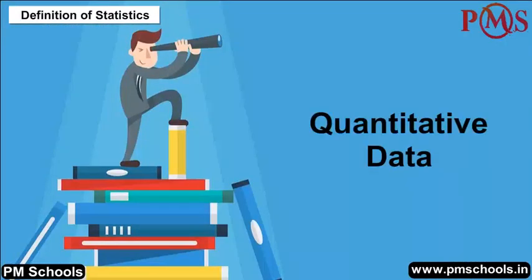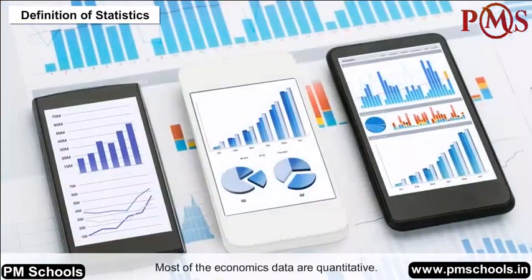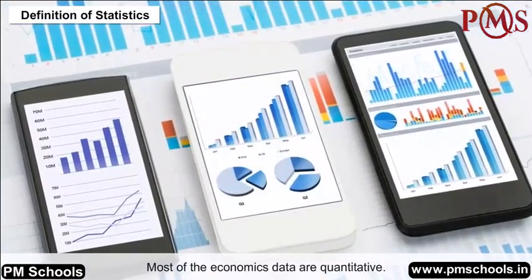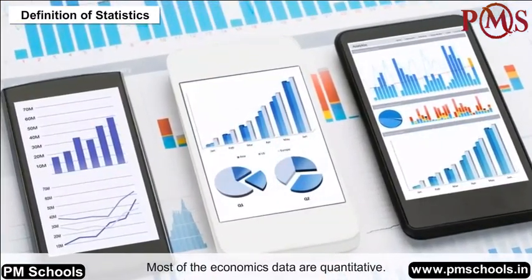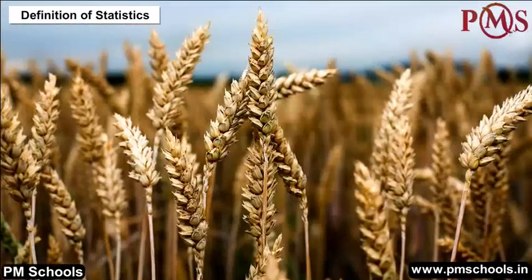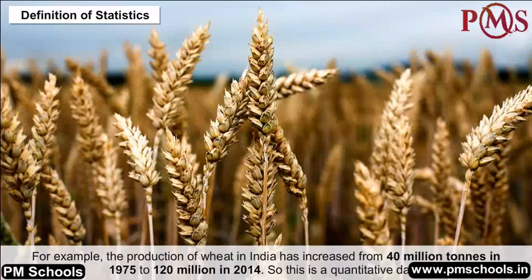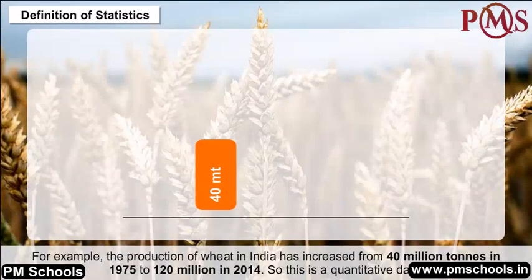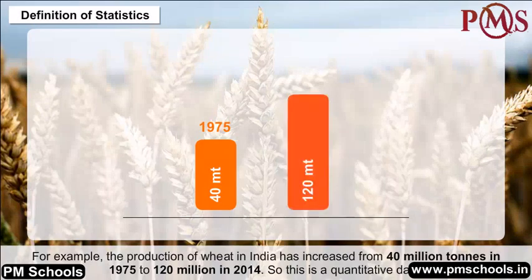Quantitative data: Most economics data is quantitative. For example, the production of wheat in India increased from 40 million tons in 1975 to 120 million tons in 2014. This is an example of quantitative data.